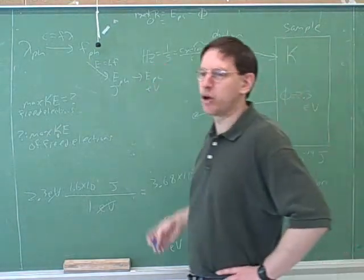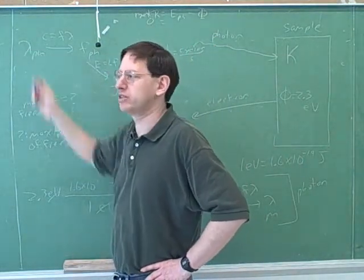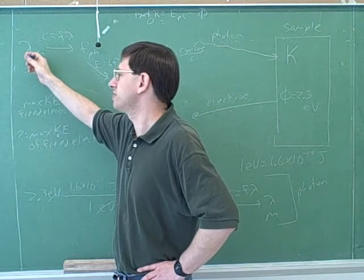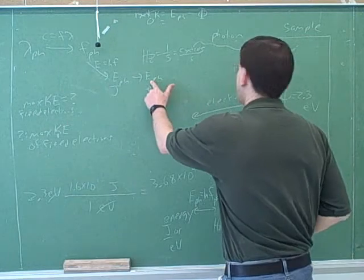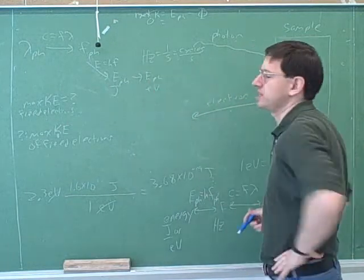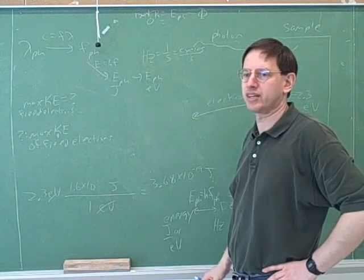That would be a good trick. So you can't assume necessarily that this wavelength will free any electrons. There's really two questions. Will this free electrons? And if it does free electrons, how much extra kinetic energy will they have? So first of all, you have to compare this energy and this energy to see if it's even big enough to free the electrons. And if it is big enough, then you can do the subtraction to find the kinetic energy.